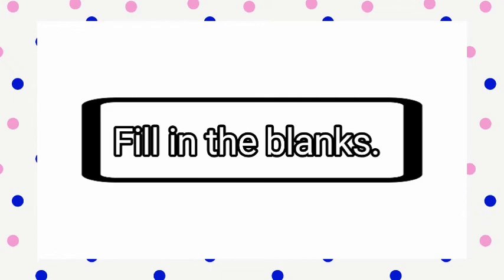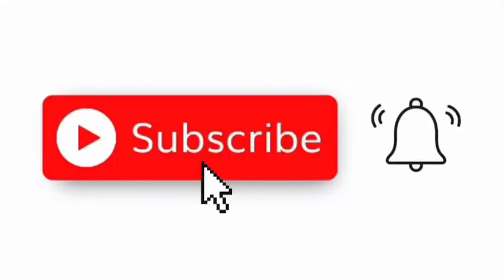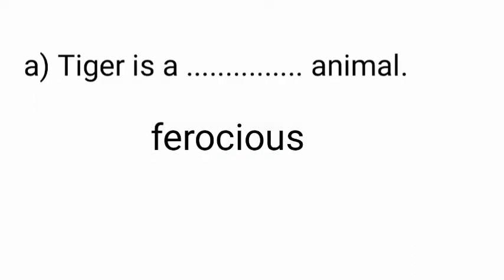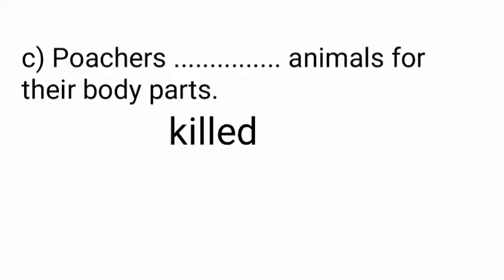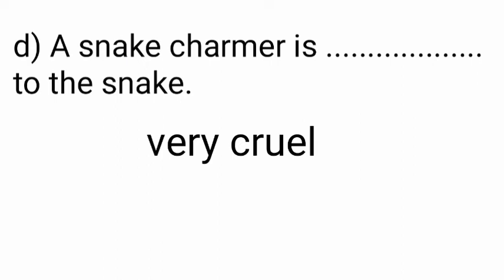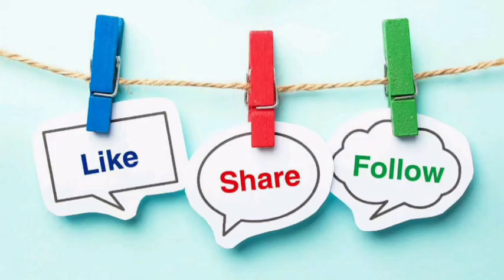Now fill in the blanks. Question A: Tiger is a blank animal — the answer is ferocious. Question B: Animals are mostly blank for their body parts — the answer is killed. Question C: Poachers blank animals for their body parts — the answer is killed. Question D: A snake charmer is blank to the snake — the answer is very cruel. Thanks for watching.